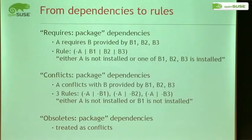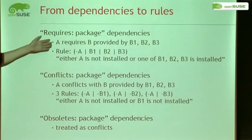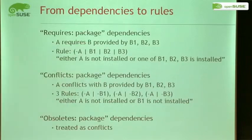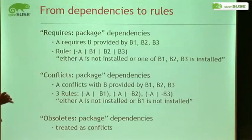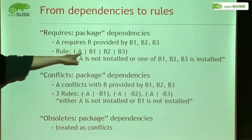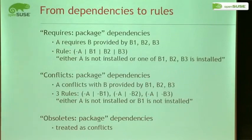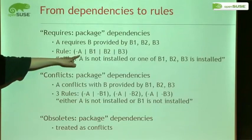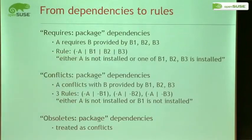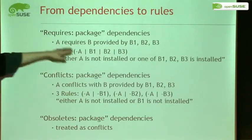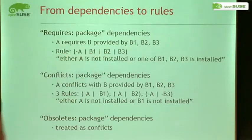Let me start digging more into how normal package dependencies are turned into a SAT problem. Say we have a package A, and A has a dependency B, and B gets provided by packages B1, B2, and B3. The idea is that this can be transferred to the following rule. The rule is: either A is not installed, or one of the three packages here is installed. This is exactly what the 'requires' clause says — if A is installed, then we need one of those; otherwise we're fine.